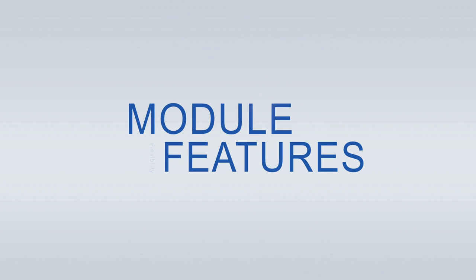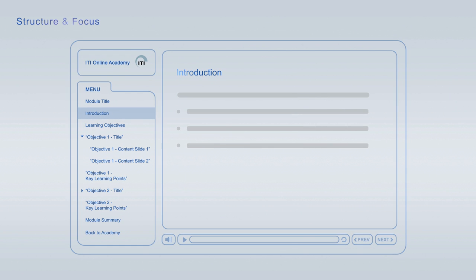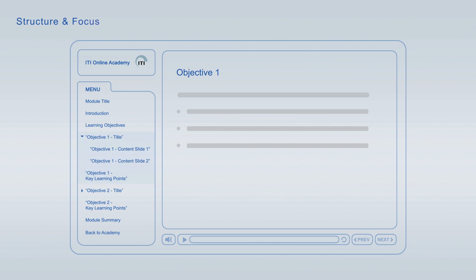ITI Online Academy learning modules offer a wide variety of features to optimise your learning. Every module starts off with an introduction that is followed by the learning objectives, giving you an overview of the main topics and learning goals covered.